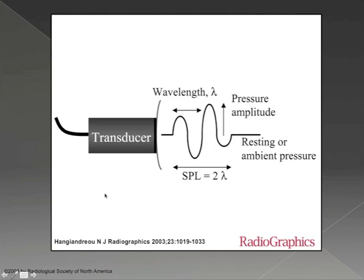If we take that sine wave and transfer it into a diagram with a patient and a transducer, you can see the transducer on the side. This line indicates the patient's skin surface, and you can see the sine wave coming out of the transducer as it's emitted.